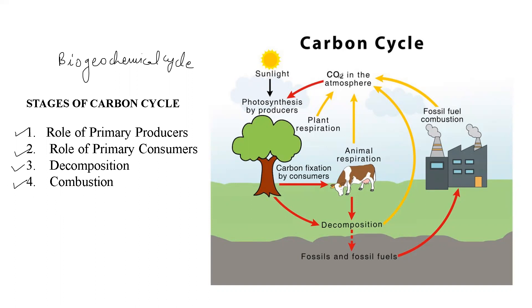Carbon dioxide is present in the atmosphere and is taken up by the plants. In the presence of sunlight, the process of photosynthesis happens. These are the primary producers. Carbon dioxide is taken up, photosynthesis takes place, and plants produce food material.